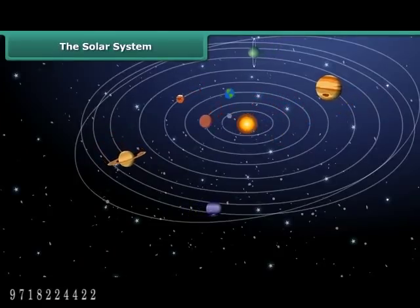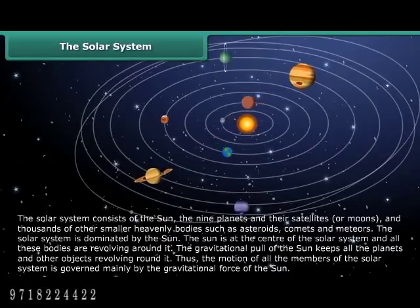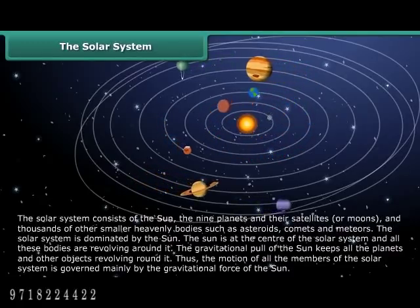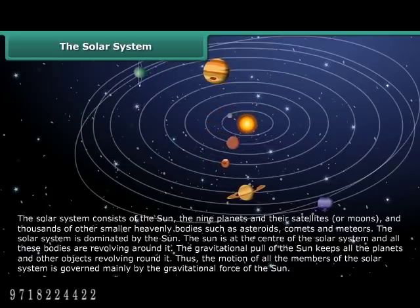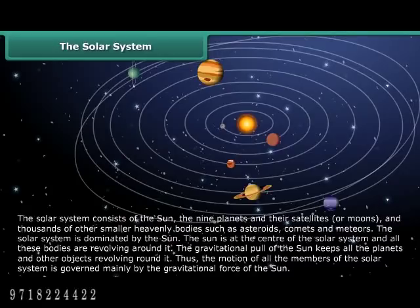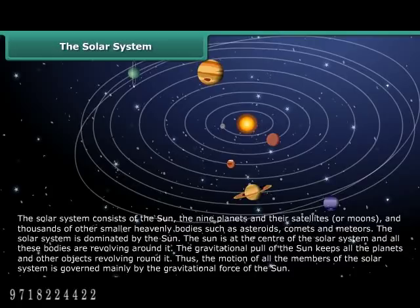The solar system consists of the Sun, the nine planets and their satellites or moons, and thousands of other smaller heavenly bodies such as asteroids, comets, and meteors. The solar system is dominated by the Sun, which is at its center, and all these bodies revolve around it. The gravitational pull of the Sun keeps all the planets and other objects revolving around it.